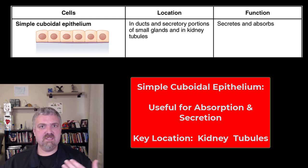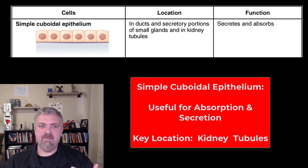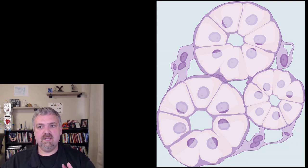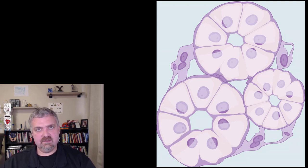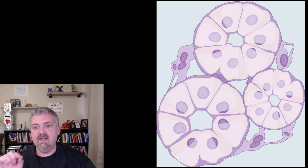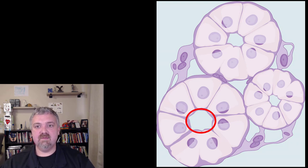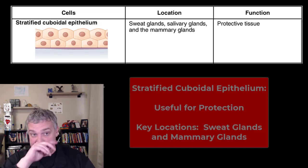They are responsible for absorption and secretion in those two key places. Here you see a single layer of these cuboid or square-cube shaped cells, and then the duct or tube itself would be on the inside, moving some sort of material.